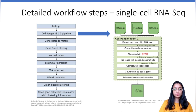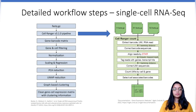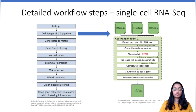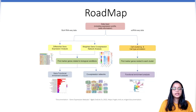Once we have the feature-barcode matrix, we perform subsequent processing steps like filtration, normalization, scaling, and dimensionality reduction methods to ultimately visualize the data in a 2D format. These steps are implemented as functions in the Seurat package, which is routinely used to process single-cell data. There are also other packages available that implement these steps, which I have spoken about in one of my earlier videos — I will add the link in the description box below.